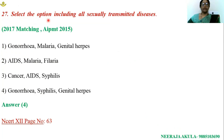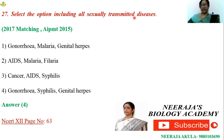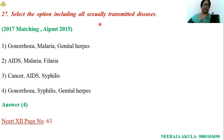Question number 27: select the option including all sexually transmitted diseases. STDs are also known as venereal diseases and can be termed as reproductive tract infections. Analyzing the options: 'Gonorrhea, malaria, and genital herpes' — malaria is not an STD. 'AIDS, malaria, filaria' — malaria and filaria are not STDs; they are transmitted through vectors.